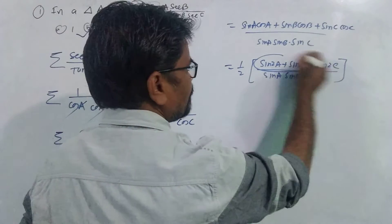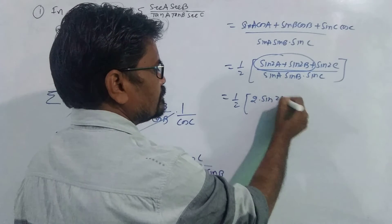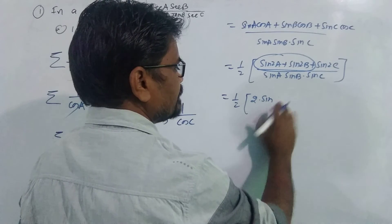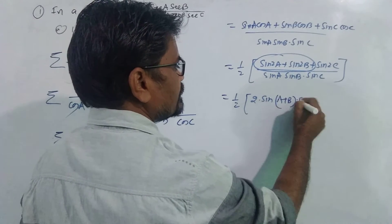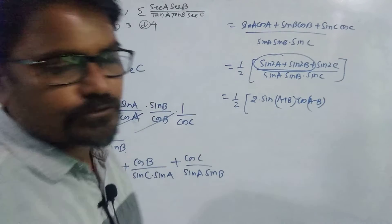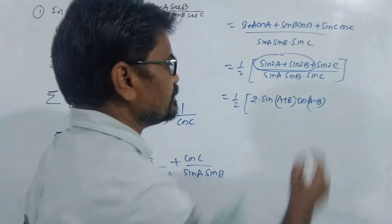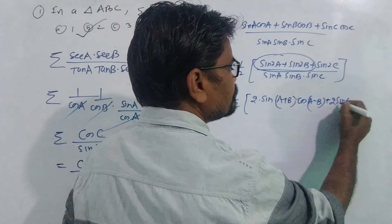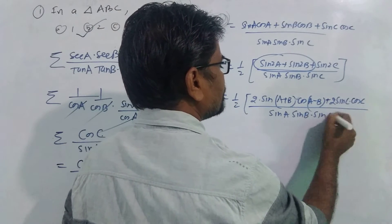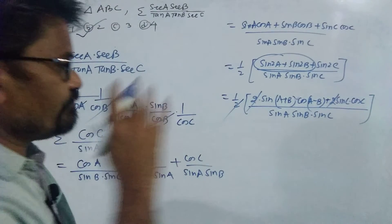Apply the sum-to-product formula on sin 2A + sin 2B. This gives 2 · sin((2A + 2B)/2) · cos((2A - 2B)/2), and the 2s cancel, leaving sin(A + B) · cos(A - B). Then sin 2C can be written as 2 · sin C · cos C. Dividing all this by sin A · sin B · sin C, with the factor of 1/2 already taken out.